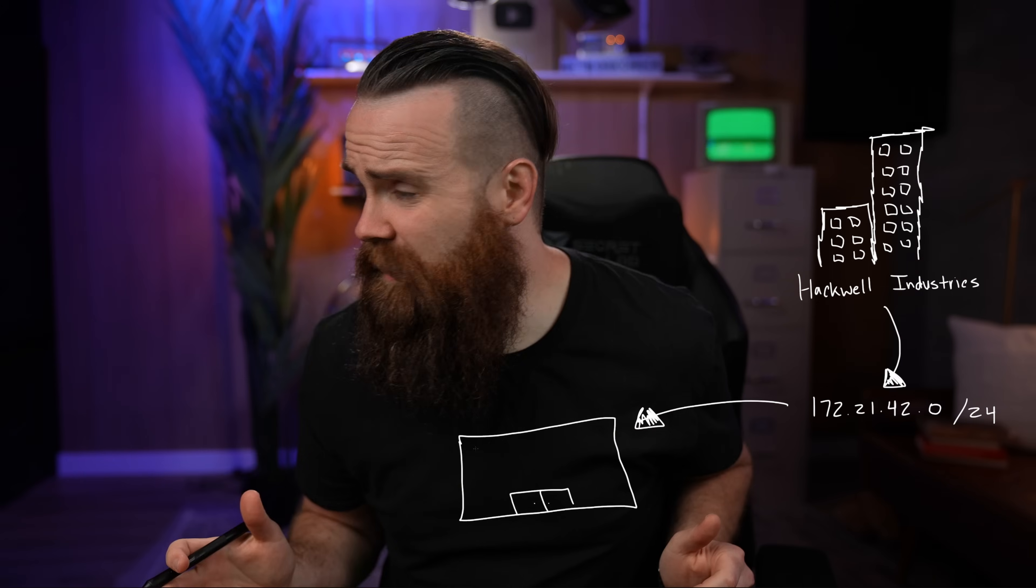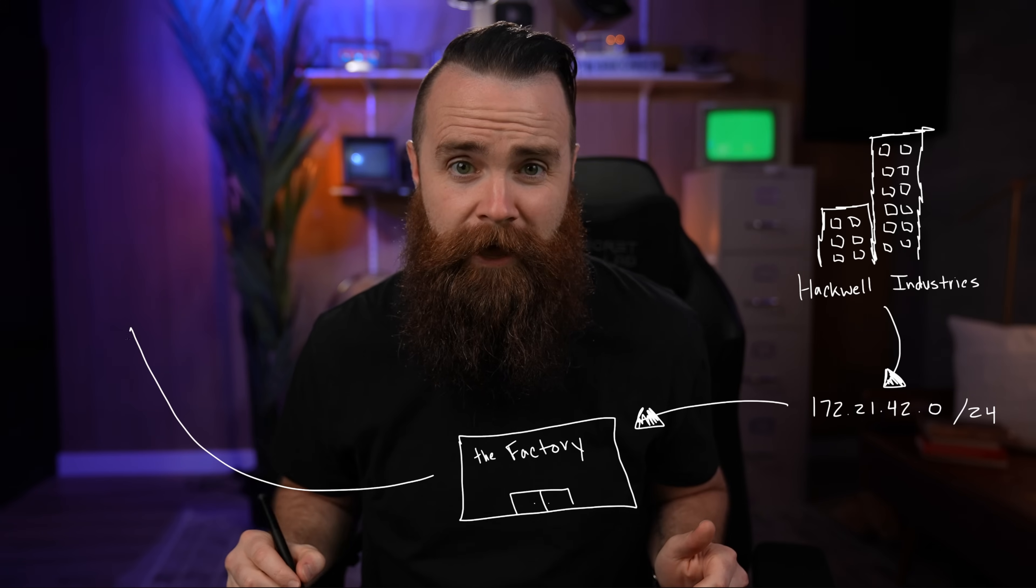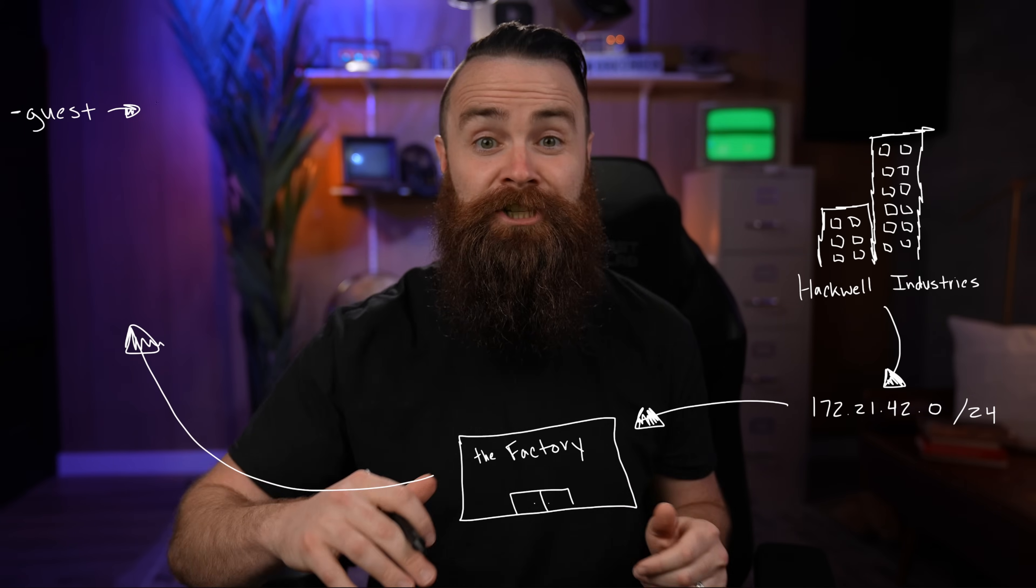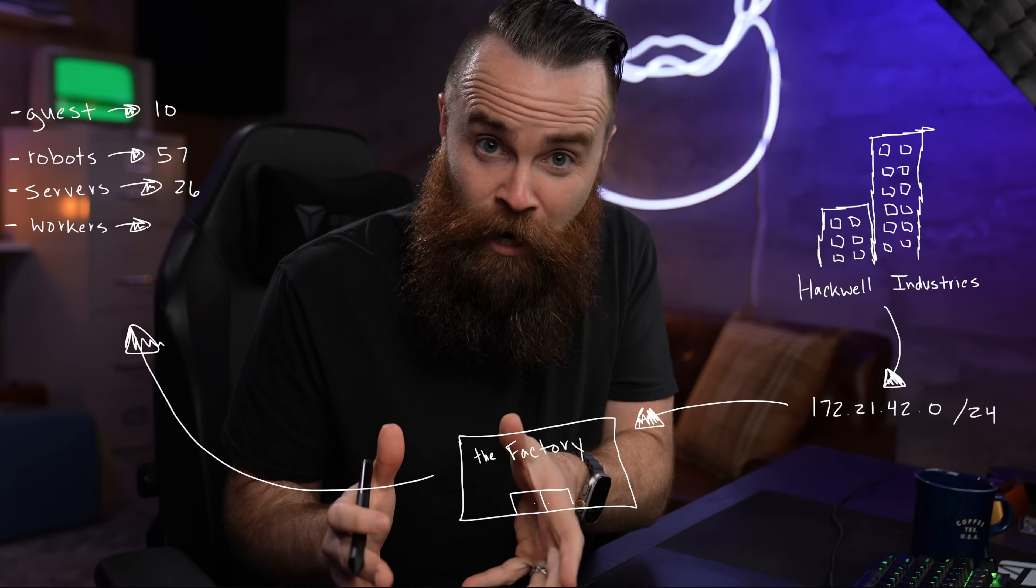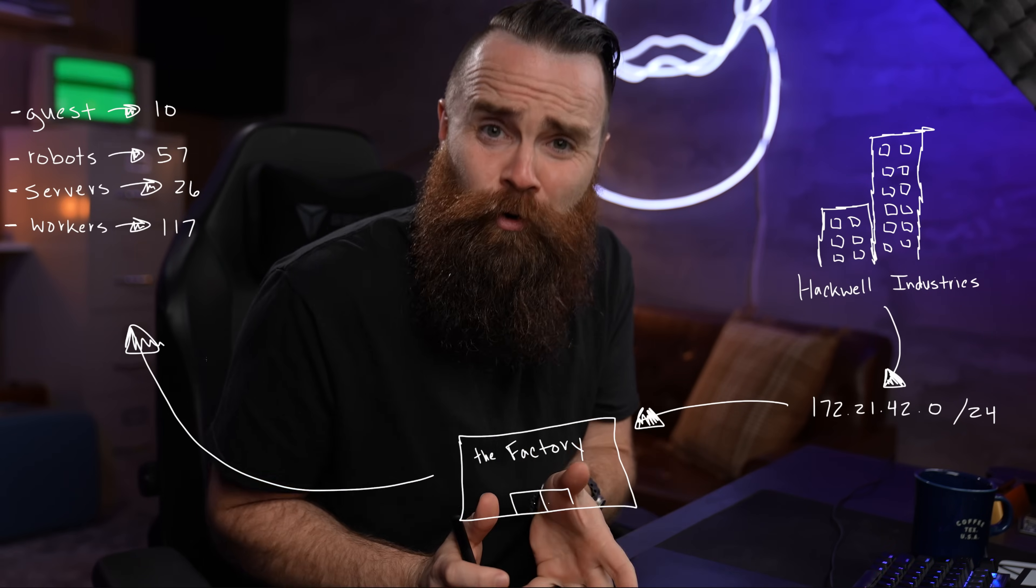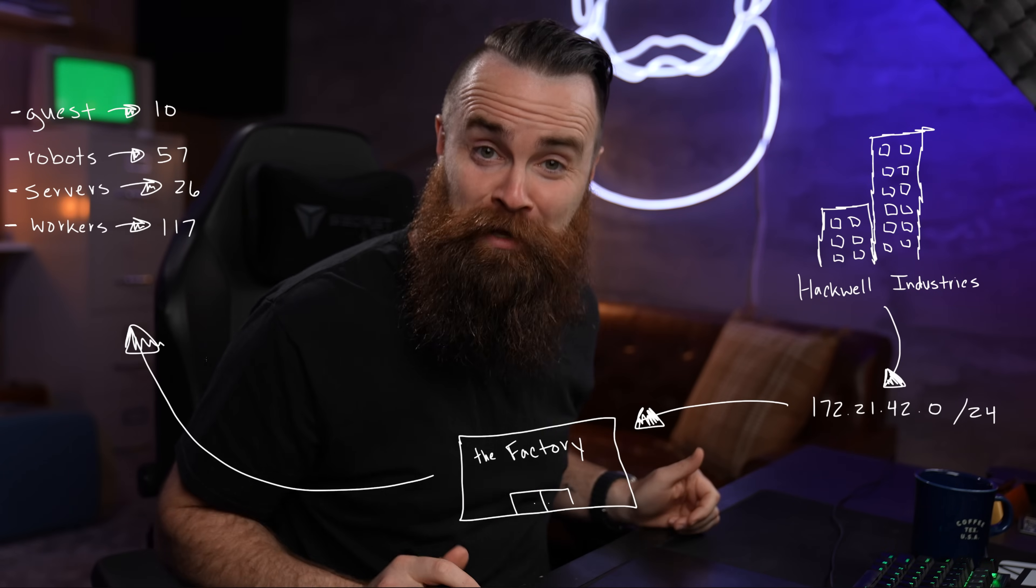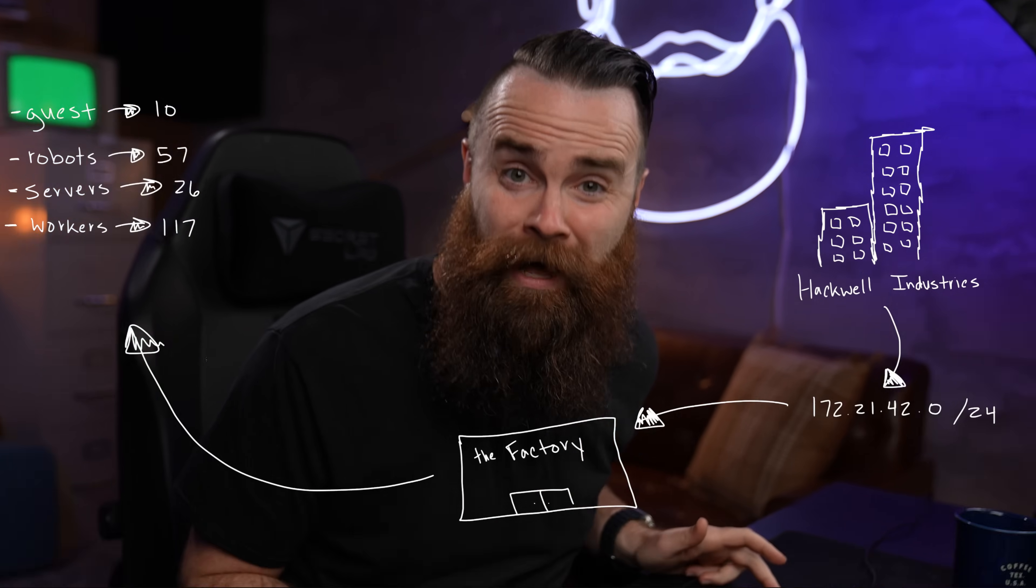You'll be given a network like this 172.21.42.0, a slash 24 network, and Bernard Hackwell, the CEO of Hackwell Industries, is telling you to address a new factory. He needs four networks: guest, robots, servers, and workers, each with their own different host requirements. And all you have is a slash 24. Get to work, slice it up.